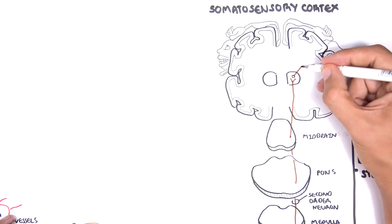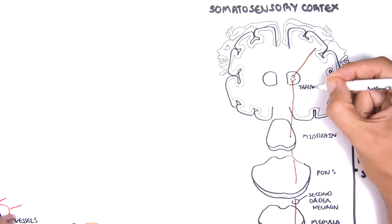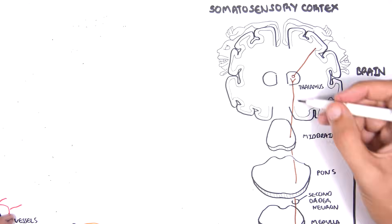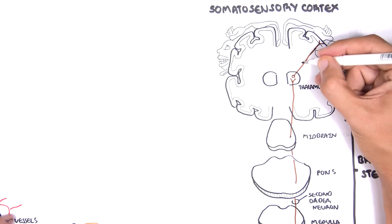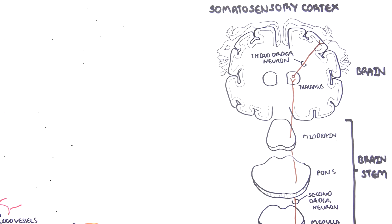The thalamus is a relay station in the brain. In the thalamus, the second order neuron will synapse with a third neuron called the third order neuron. The third order neuron will carry this action potential stimuli to the somatosensory cortex. It will actually discern which area of the body that information originated from. So here it will be the hand, and the somatosensory area for the right hand perceives pain.